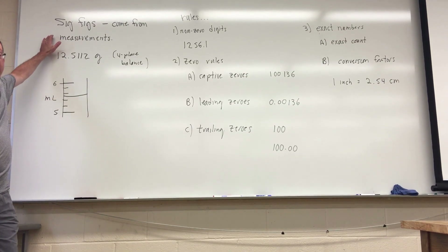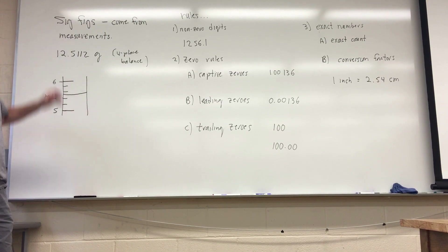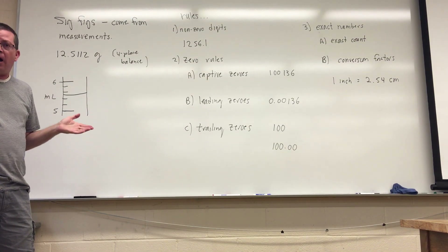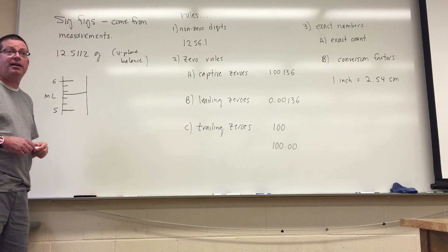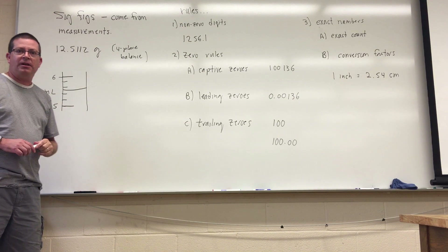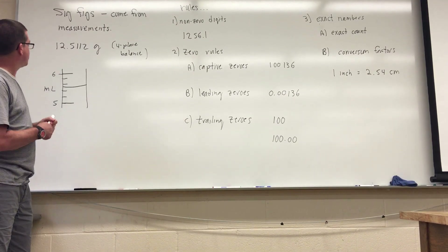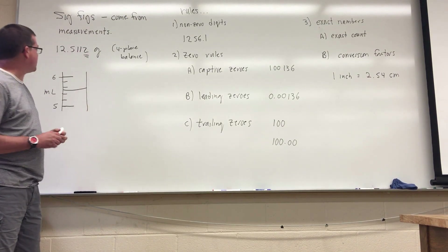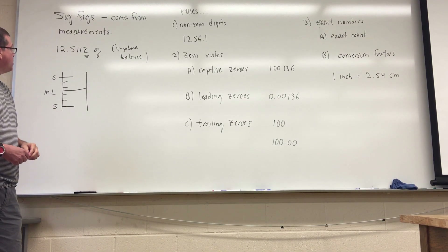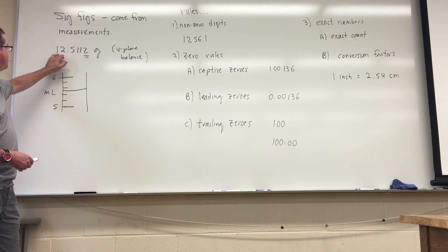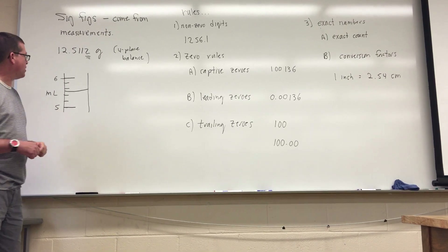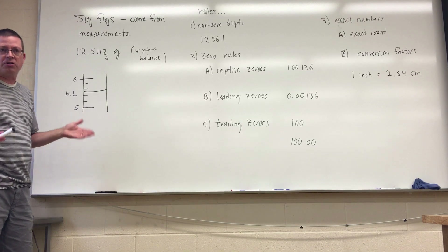For example, if we want to obtain the mass of a particular object using a four-place balance, we might find that mass to be 12.5112 grams. We know that that particular balance is good to the fourth decimal place, so that tells us we're going to have significance to that fourth decimal place. That means in this case we're going to have six significant figures in that particular measurement.